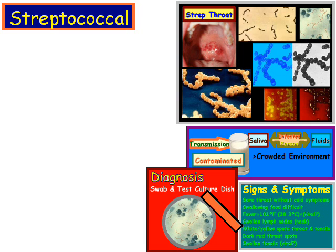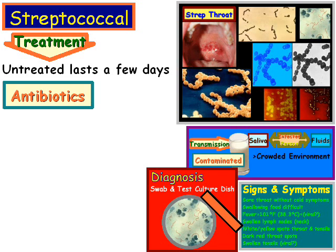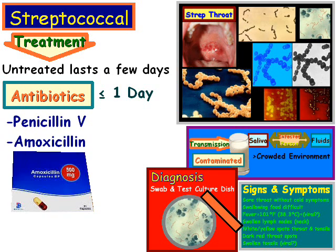As far as treatment is concerned, if strep throat is untreated, it usually resolves itself within a few days in most cases. If you use antibiotics, that can shorten the illness to less than or equal to around one day. Some antibiotics used in the US are penicillin V and amoxicillin.